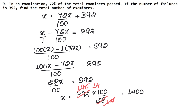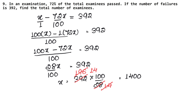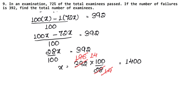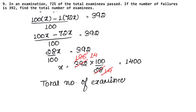What did we need to find? Total examinees. And X was assumed to be total examinees. Hence, total number of examinees = 1400 is the answer. The book has a wrong answer — it shows rupees, but this problem has nothing to do with rupees. So the correct answer is 1400. Let's do the next question now.